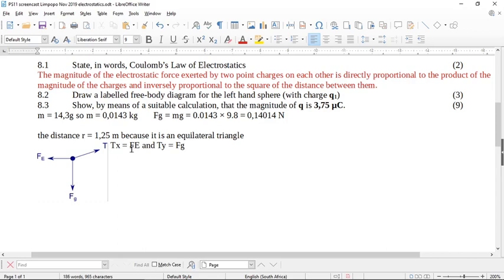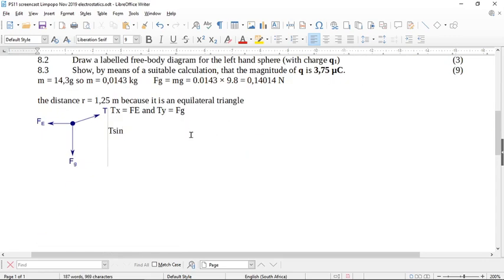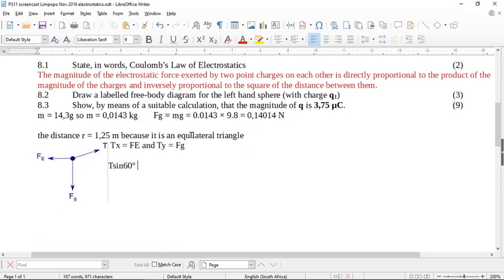But now we have a value for Fg. So what will T Y be? T, the Y component is going to be cos or sine, sine, yes? T sine, and what is my theta? My theta is 60. T sine 60 equals Fg equals 0.14014, okay? Which means we can write an expression for T. T equals 0.14014 over the sine of 60, okay? Does this make sense? I hope this makes sense.